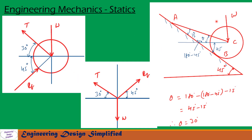Now let us look at the forces and reactions. The free body diagram of the roller is drawn here. The angle between AC and the horizontal is theta, calculated as 30 degrees. The tension in string AC makes an angle theta of 30 degrees from the horizontal, acting in that direction. Weight W acts downwards, and the reaction force RB is perpendicular to the inclined plane, making an angle of 45 degrees with the horizontal.